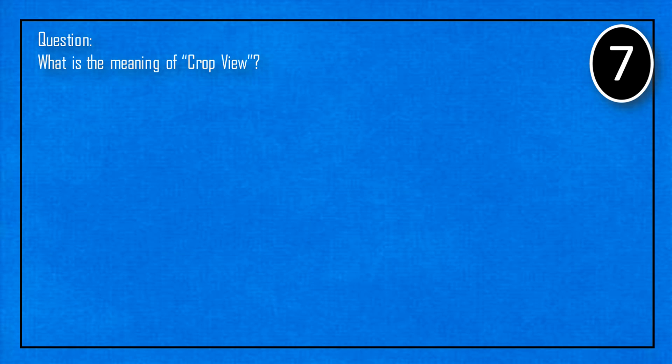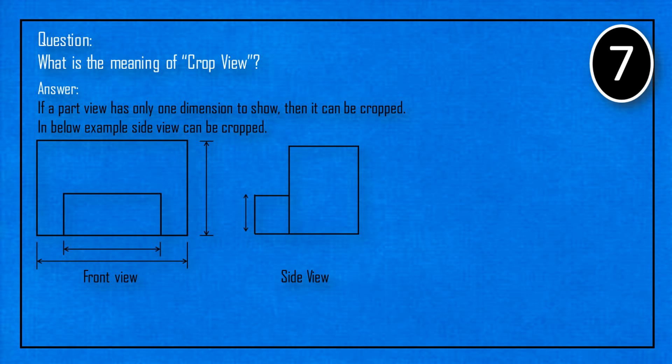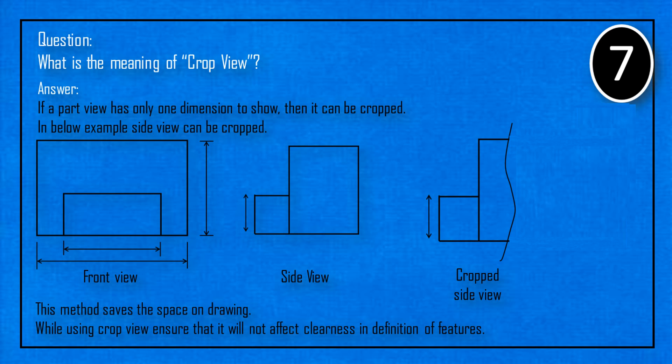What is the meaning of cropped view? If a part view has only one dimension to show, then it can be cropped. In below example, side view can be cropped. This method saves space on drawing. While using cropped view ensure that it will not affect clearness in definition of features.